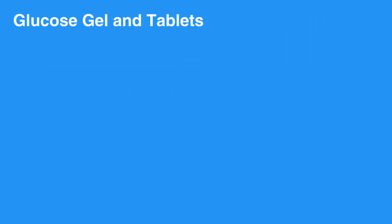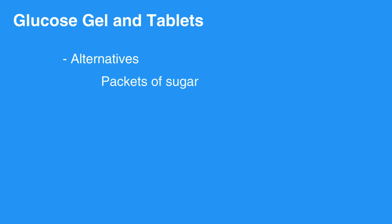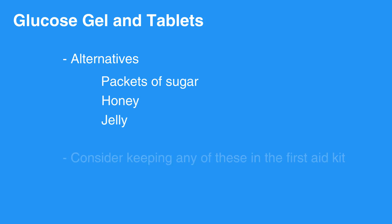Glucose gel and tablets are available and a good way to quickly increase blood sugar. Alternatives to gels and tablets include packets of sugar, honey, or jelly from restaurants which may be readily available. Consider keeping any of these in the first aid kit.